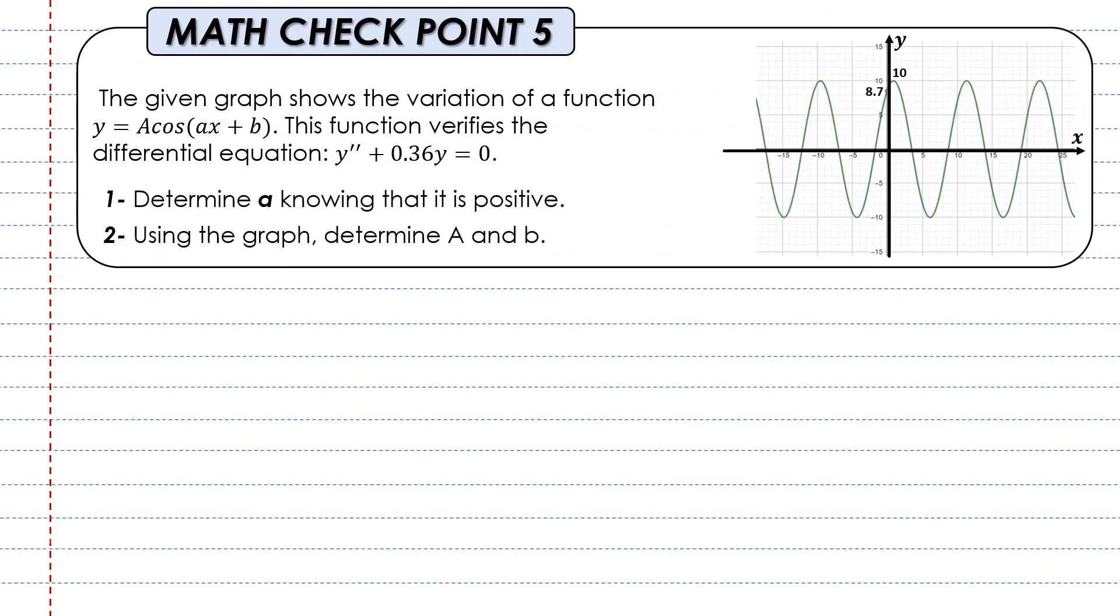Moving to our final math checkpoint: The given graph shows the variation of a function y = A cos(ax + b). This function verifies the differential equation y'' + 0.36y = 0. You are given the function, its graph with some values, and a differential equation. This is very similar to what we'll encounter in the physics of this chapter, so this might be the most important application for this section. In part 1, determine A knowing it's positive. Using the graph, determine A and B.